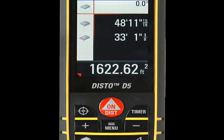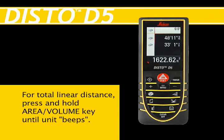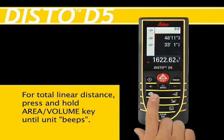Area, square feet, will simultaneously appear at bottom of screen. Note: to have the Disto unit calculate the total linear measurement of the room's base, useful for calculating base or crown molding, press and hold the area volume key until unit beeps.